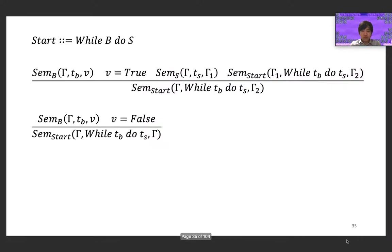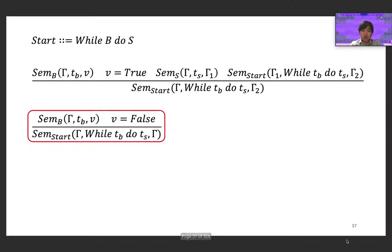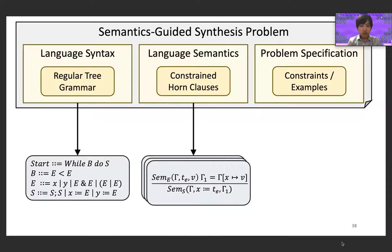For some productions, one needs to perform case analysis. For example, in while loops, the behavior is different depending on what the condition evaluates to. In cases like these, we can supply separate semantic rules—CHCs—for when the condition is true and the loop iterates, or when the condition is false and the loop terminates. Now that we know how to express the semantics in a SemGUS problem, the only component left to define is a specification.